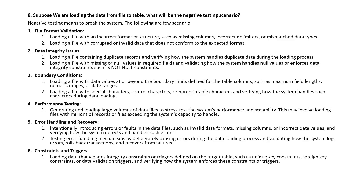Suppose we are loading data from a file to a database table — what will be the negative testing scenarios? Negative testing means to break the system. Scenarios include: file format validations — incorrect file format or structure such as missing columns, incorrect delimiters, or mismatched data types; corrupted or invalid data; data integrity issues like duplicate records in the file; checking for missing or null values; and boundary conditions — data values beyond the boundary limits defined in the table columns, such as maximum field lengths, numeric ranges, or date ranges.